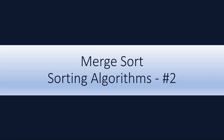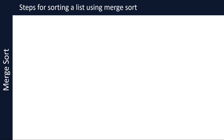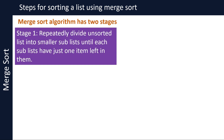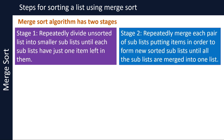In part two of this video series about sorting algorithms, we will take a look at the merge sort algorithm. The merge sort algorithm has two stages. In stage one, it repeatedly or recursively divides an unsorted list into smaller sublists until the sublists become so small that each of them just has one item.